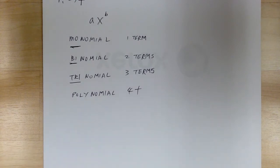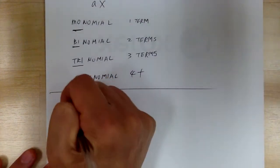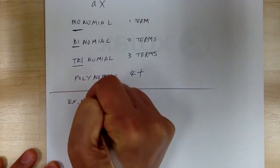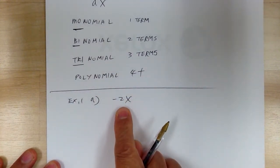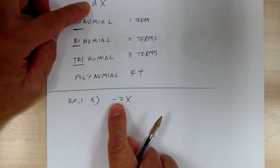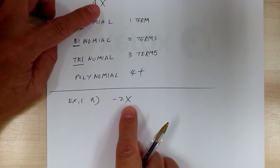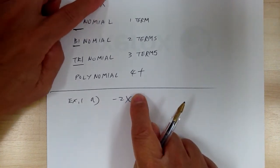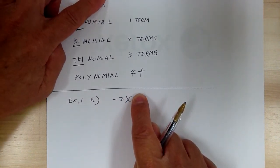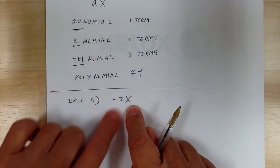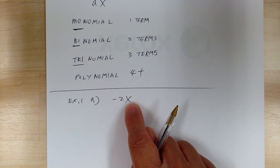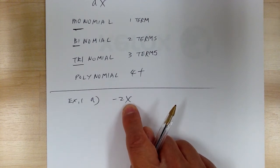Let's go over some examples of what is a polynomial and what is not. Example one, A: negative 2X. So this is an example of that format — you've got a number, a variable, and an exponent. There's no written exponent, which means it's one. So this fits that format, and this is an example of a monomial — one term.